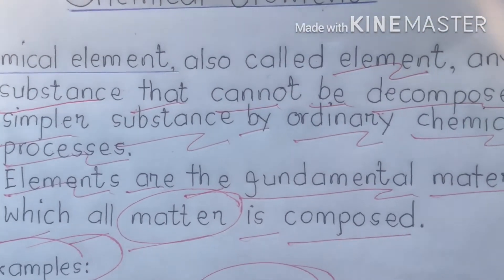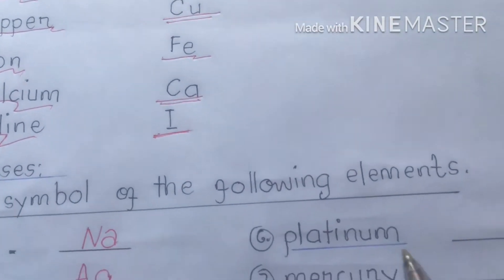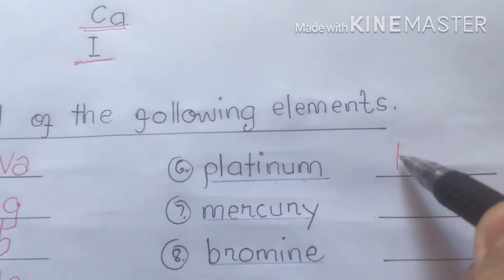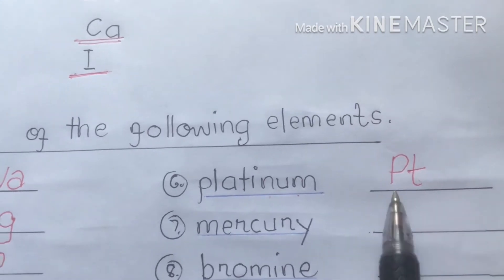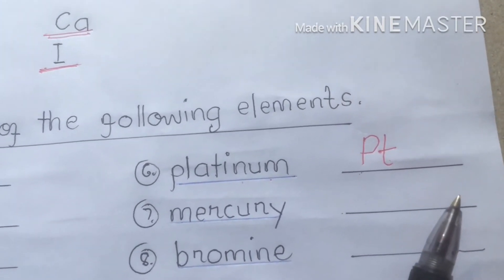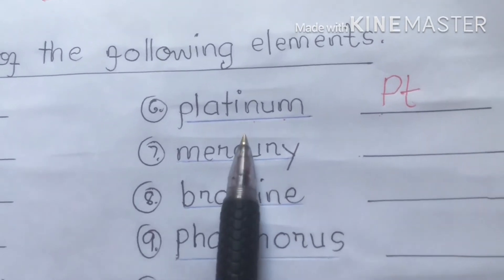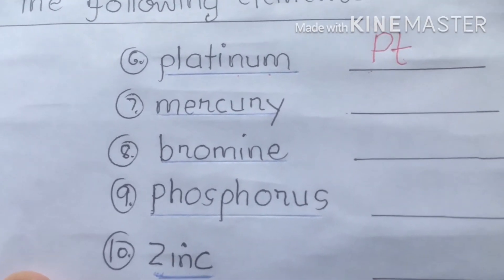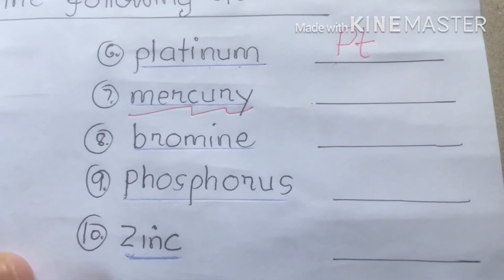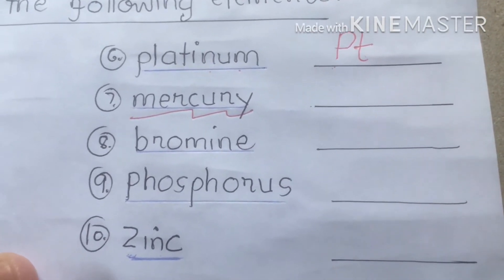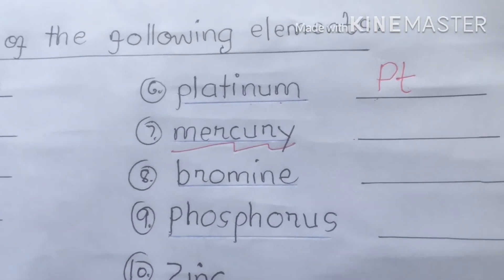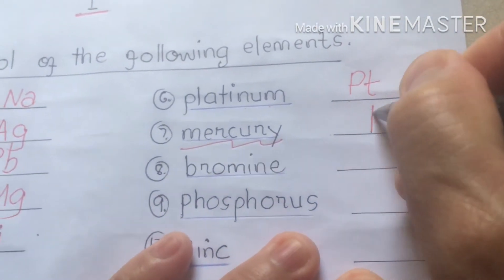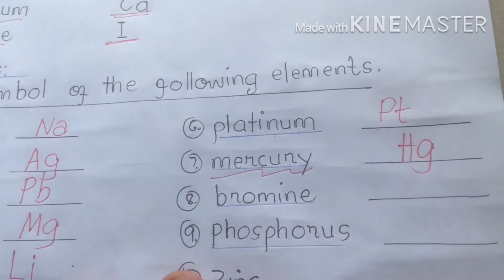Number seven is platinum. For platinum, we have Pt — uppercase P, lowercase t. Remember, platinum is a very expensive element also used in making jewelry. For mercury, we write Hg. Mercury is a white liquid, also used in processes like finding gold.